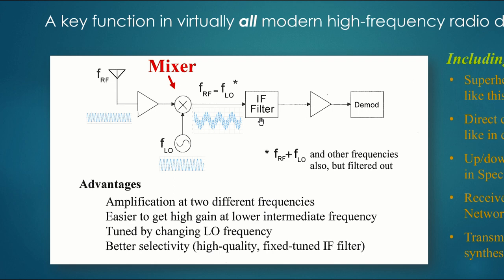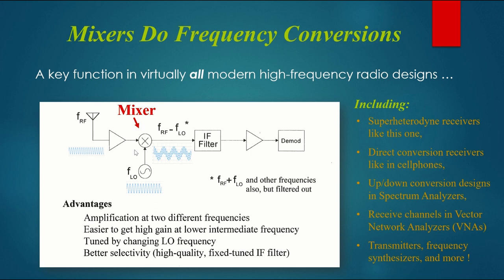And this mixer concept is used in virtually all modern high-frequency radio designs and test equipment. Including superheterodyne receivers, like this one. Something called direct conversion receivers, like used in cell phones. Up-down conversion designs. So not only do you sometimes convert from a high frequency to a lower frequency, sometimes you convert from a high frequency to an even higher frequency. And we're going to see how that's used in spectrum analyzers.